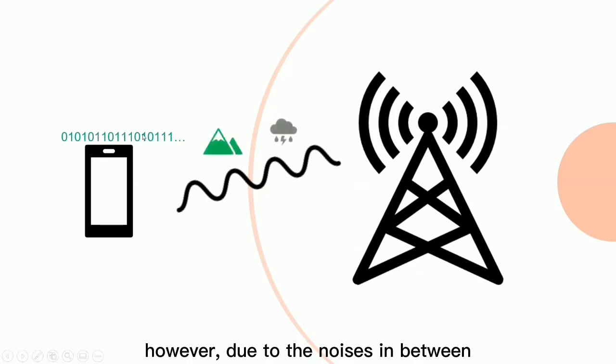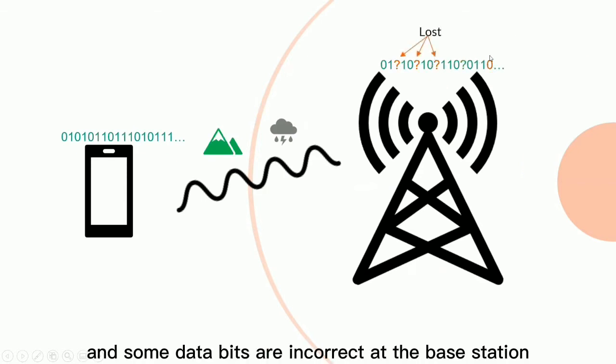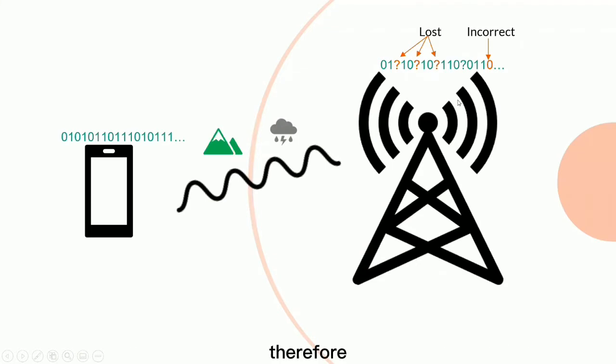However, due to the noises in between, such as obstacles and bad weather, some data bits are lost and some data bits are incorrect at the base station. Therefore, how to reconstruct transmitted data reliably and efficiently is inevitably an important problem.